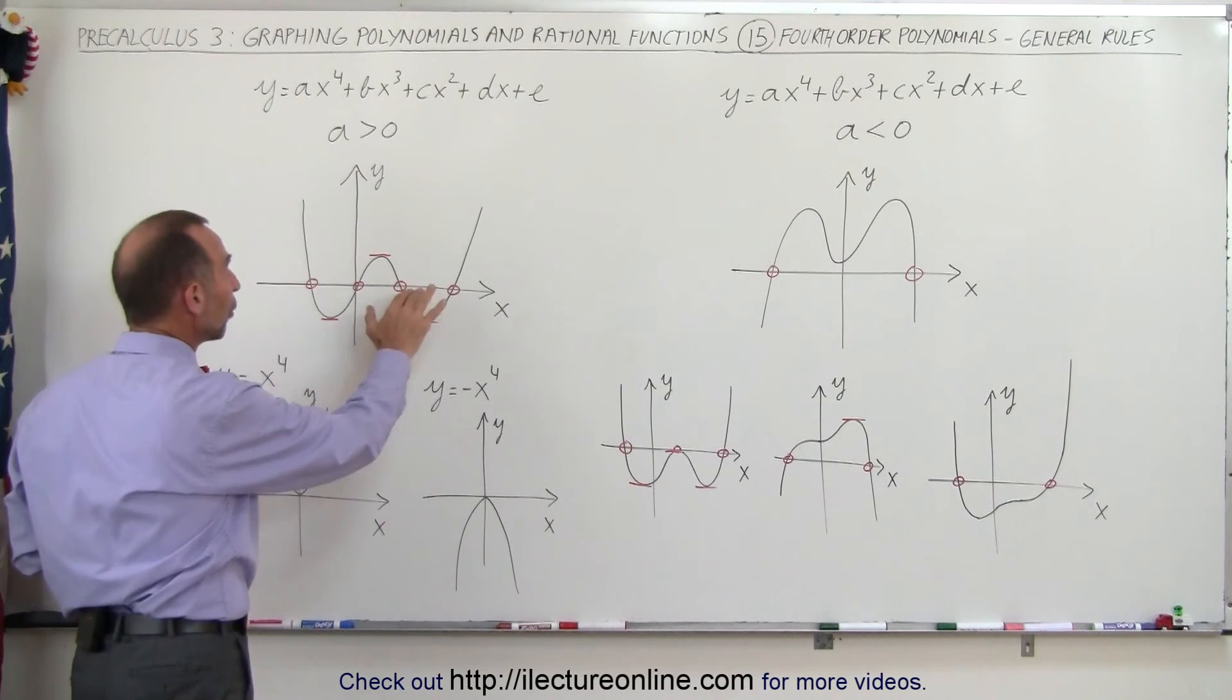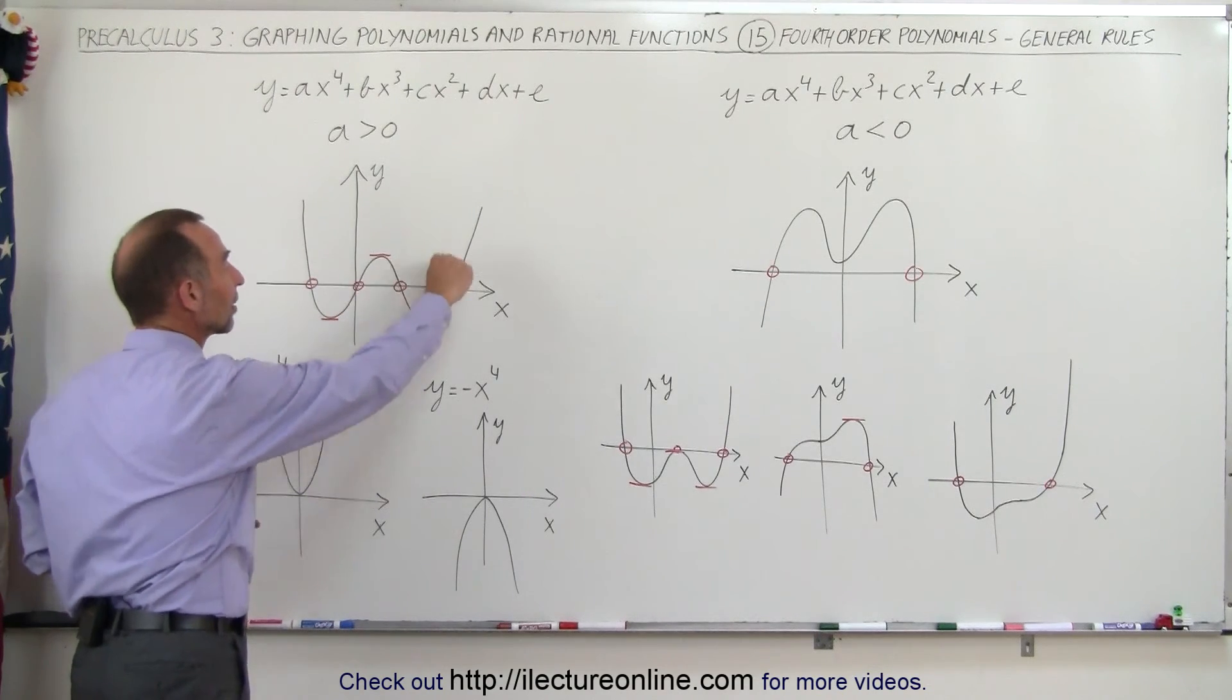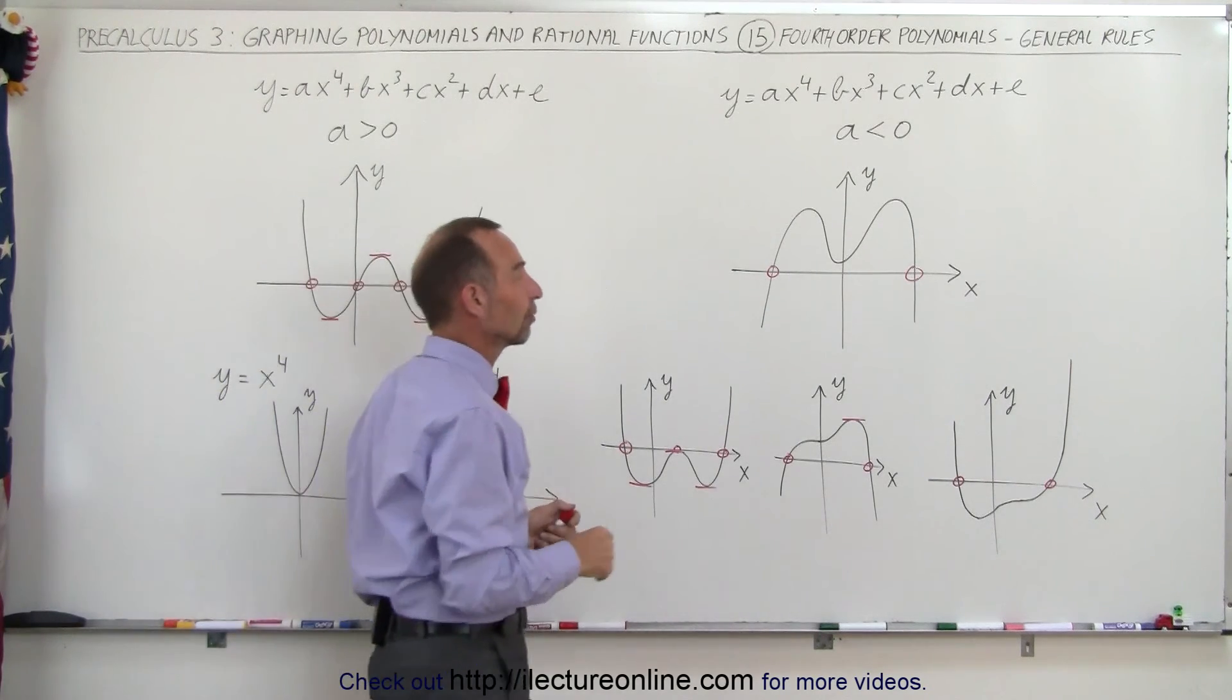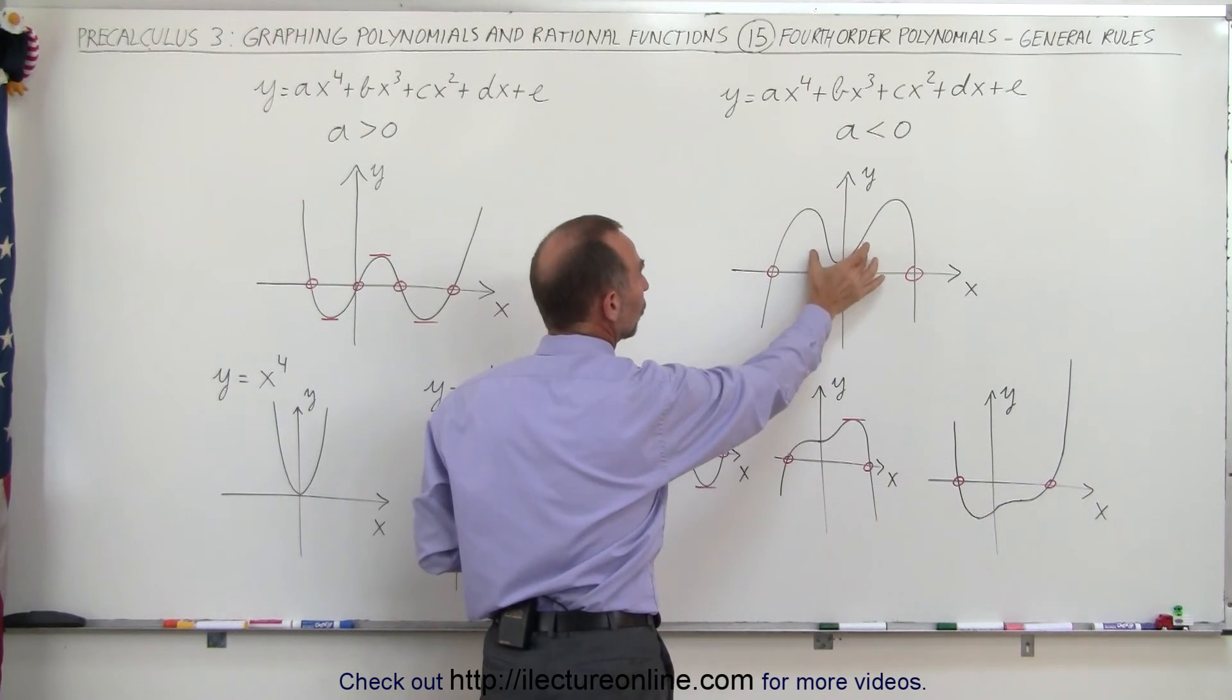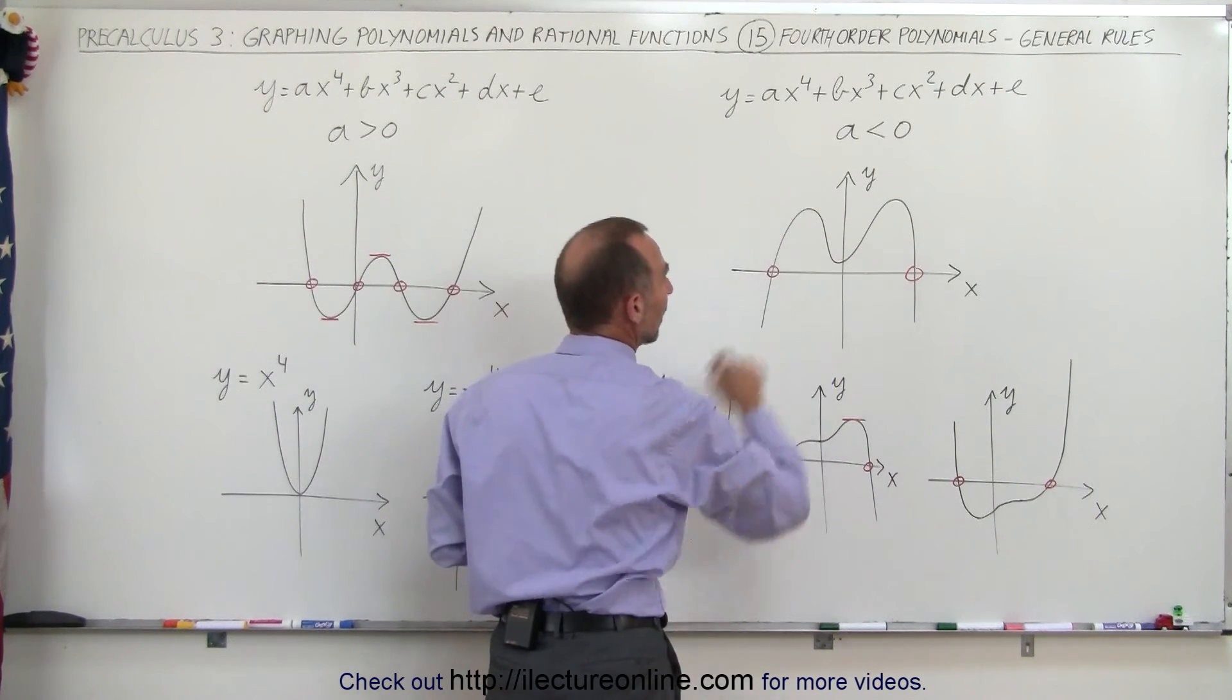You can have as many as four roots when the graph crosses the x-axis four times. Or like this, where this doesn't cross the x-axis, so those two roots are eliminated, but you still have the two on the outside.